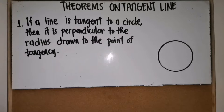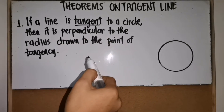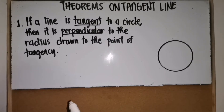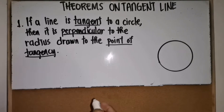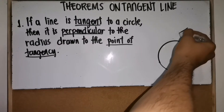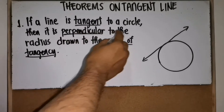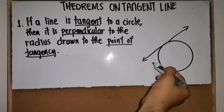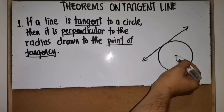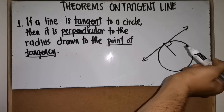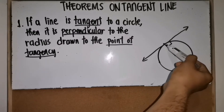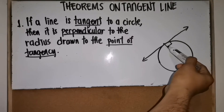Now let's talk about theorems on tangent lines. Theorem one states: if a line is tangent to a circle, then it is perpendicular to the radius drawn to the point of tangency. To unlock key terms: tangent means intersecting the circle at exactly one point; perpendicular means forming a 90-degree or right angle; and the point of tangency is where the circle and the tangent line meet. So the tangent line is perpendicular to the radius drawn to the point of tangency, forming 90 degrees on each side.